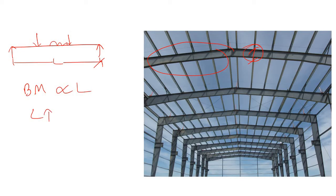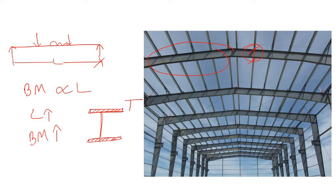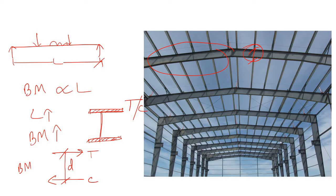If the span is high, definitely the bending moment will also be high. Let's say you are going to use some wide flange section. The flanges have some constant value for carrying the tensile force as well as the compressive force. Bending moment is nothing but a push and a pull. So for this constant value of tension or compression, if you have a large amount of bending moment, you have to simply increase the lever arm. So for larger span, this depth requirement becomes very high.